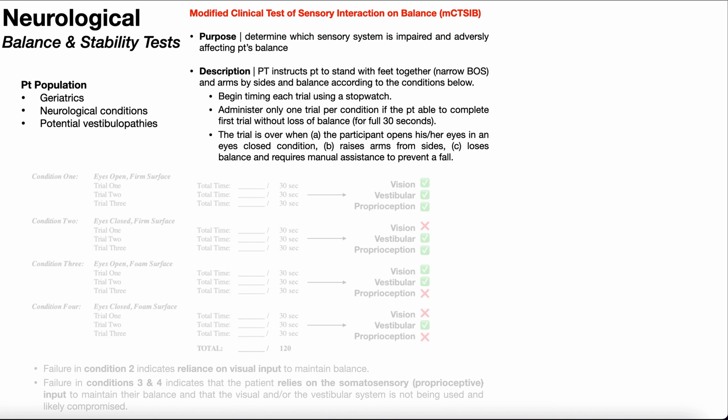The modified CATSIB would typically be used in the geriatric population, those with neurological conditions that may have impaired cutaneous sensation, impaired proprioception, and also those with potential vestibulopathies like Meniere's disease or vestibular neuritis, etc.